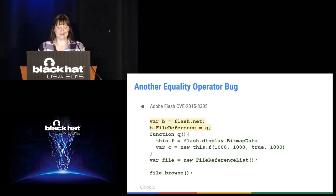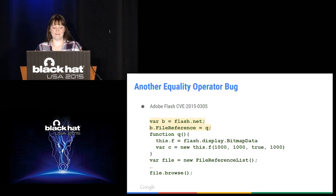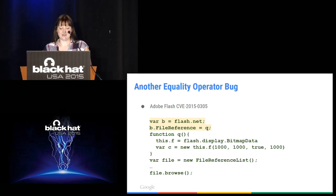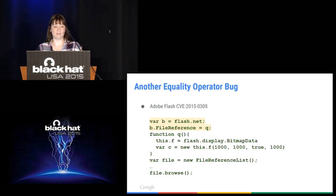Here's a second Flash example where I had to do a bit more massaging to make it compile. I have var b equals flash.net, then b.FileReference equals Q, where Q is a wrapper around the bitmap data constructor — essentially redefining the FileReference constructor as the bitmap data constructor. I create the FileReferenceList and call browse, which brings up the file selection screen. When you select a file, it tries to create a FileReference object to hold the selected filename, but since the constructor has been overridden it actually creates a bitmap data object — type confusion again.